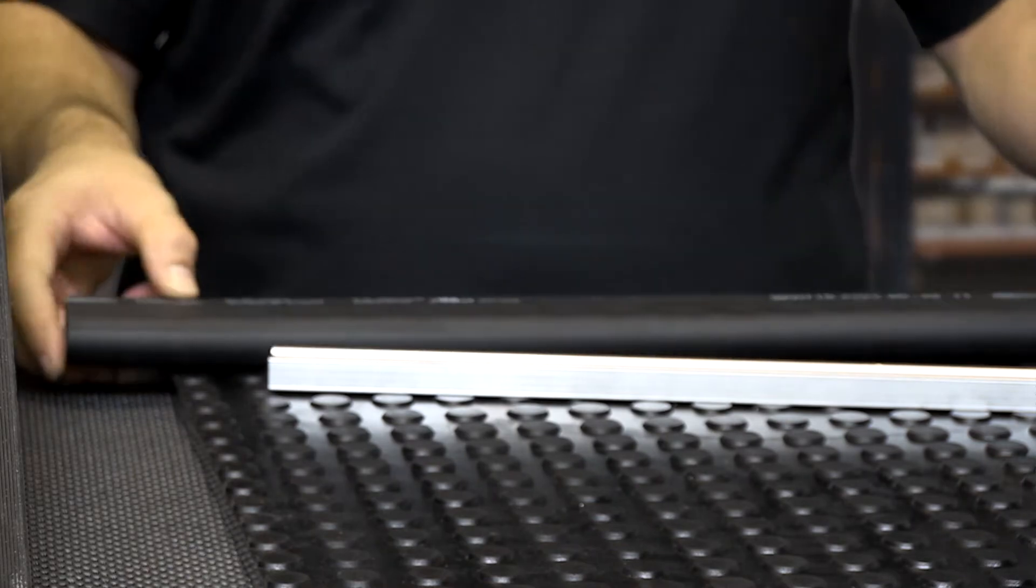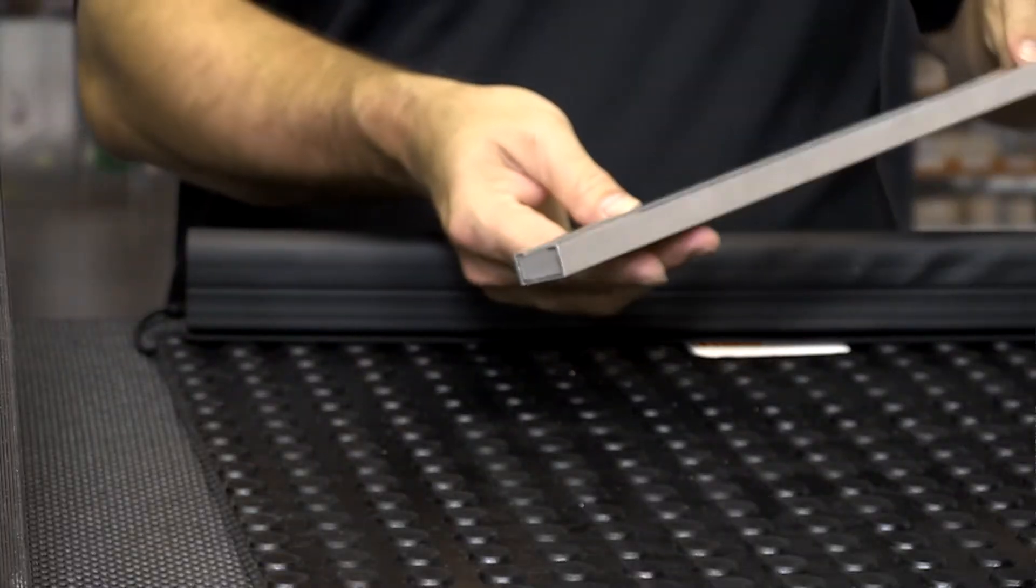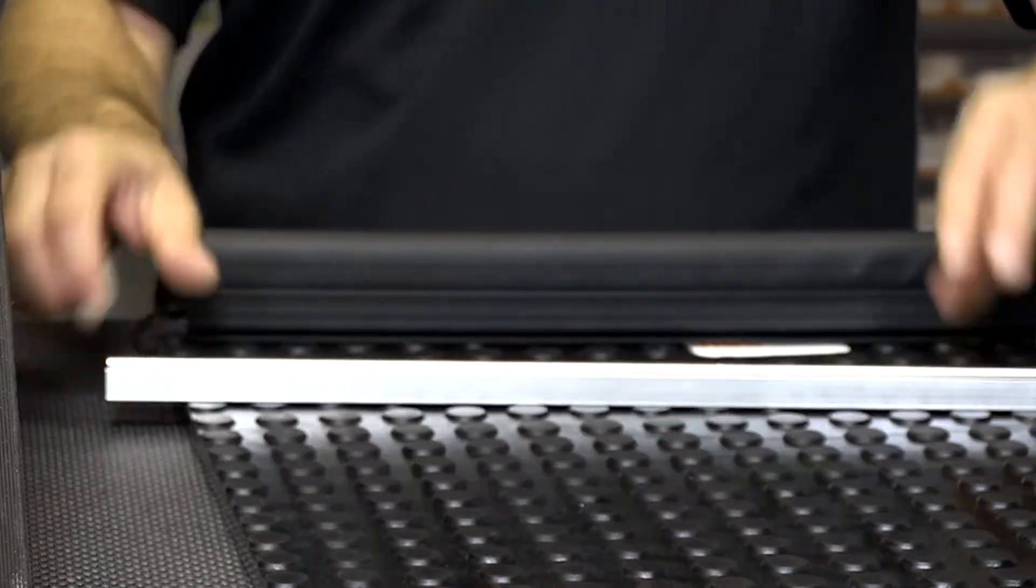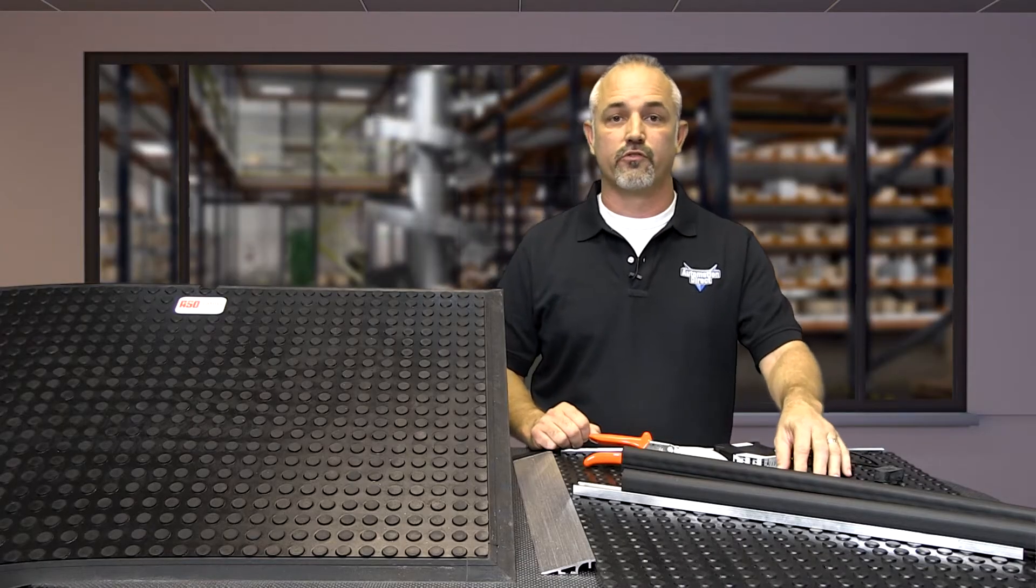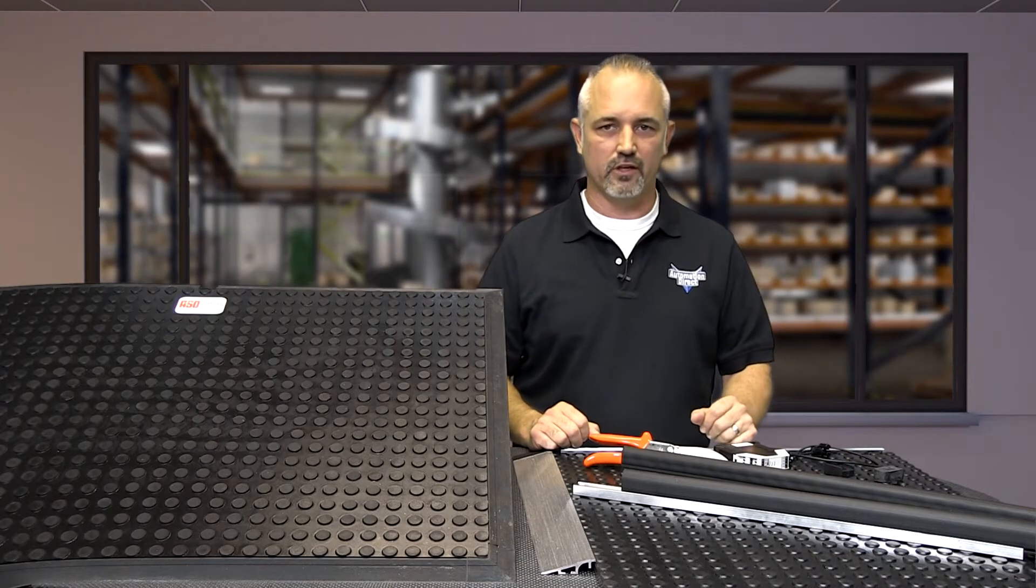Don't forget to select the proper sized mounting rail needed for the safety edge. The aluminum mounting rails are sold in 2 and 5 foot lengths.